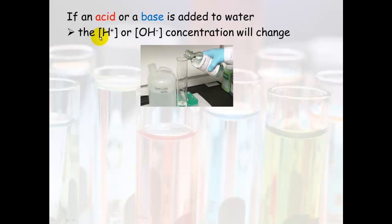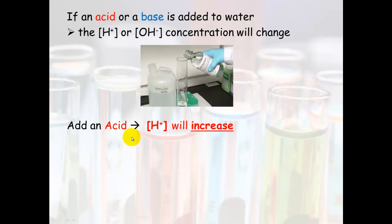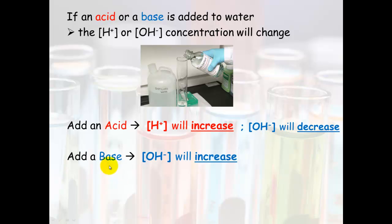If an acid or base is added to water, the concentrations of the hydronium and hydroxide ions will change. If you add an acid, the hydrogen ion concentration will increase, and concordantly the hydroxide concentration will decrease. If you add a base, the hydroxide concentration will increase and the hydrogen ion concentration will decrease.